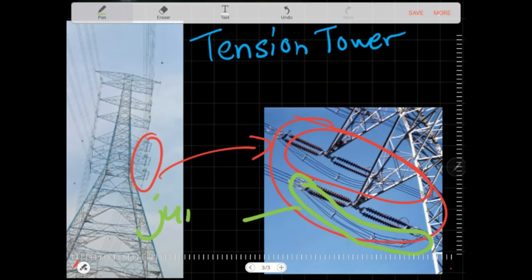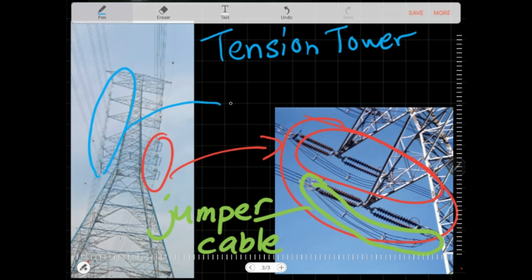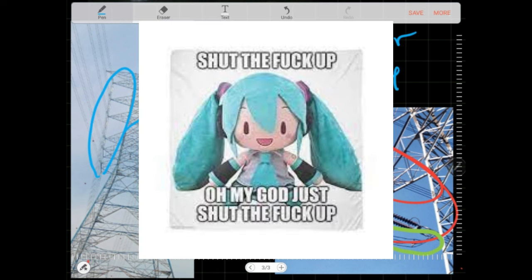Last of all, we have tension towers. When there is a larger turning angle, you will need a tension tower. Because when you're not straight, there's a lot of tension going on. Shut up, you're gonna get cancelled. Oh my god, just shut up man.